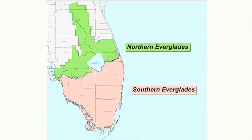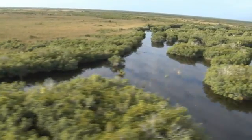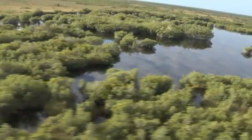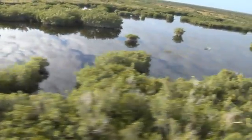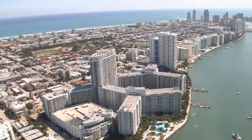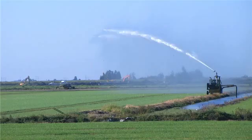The Everglades is divided into two sections to recognize the importance and connectivity of the entire Everglades ecosystem, both north and south of Lake Okeechobee. The premise of the Comprehensive Everglades Restoration Plan, or CERP, is to provide the right amount of water and flow conditions to the Everglades, while providing water for urban and agricultural needs to accommodate a 50-year population projection.